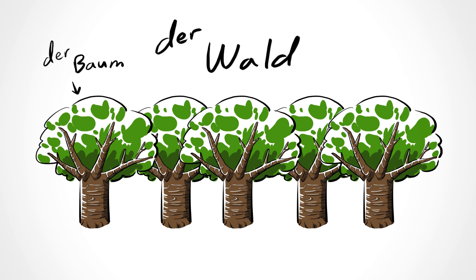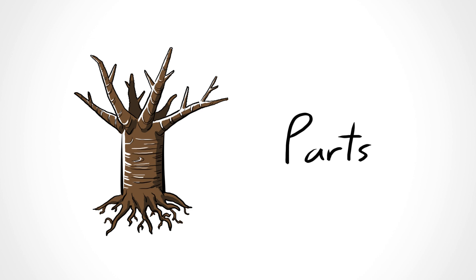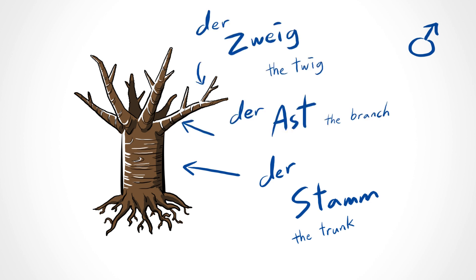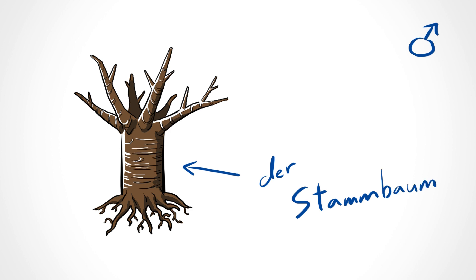Now let's take a look at the parts of a tree. Just like der Baum, most of the parts are masculine. We have der Stamm — the trunk, der Ast — the branch, and der Zweig — the twig. Der Stammbaum means family tree, which makes you go... ah.